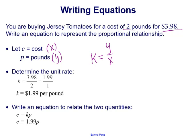Now we can use that number to write an equation to relate the two quantities. Keeping in mind y equals kx, we're using c and p for the cost and the pounds instead of y and x. So it would be c equals kp. If we substitute in k for our 1.99, the equation would be c equals 1.99p. That would relate any cost with any amount of pounds of tomatoes.